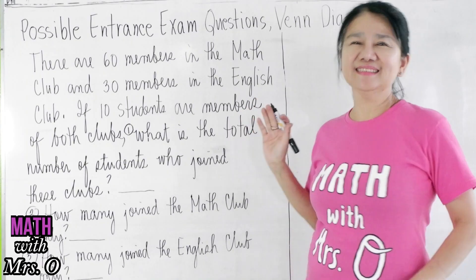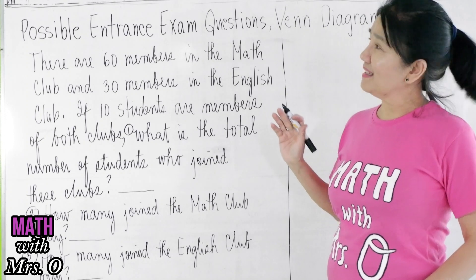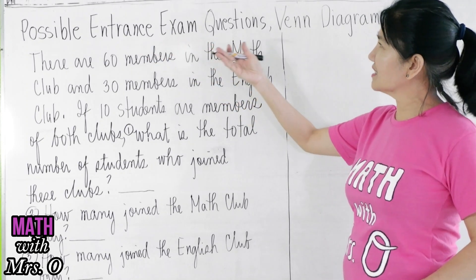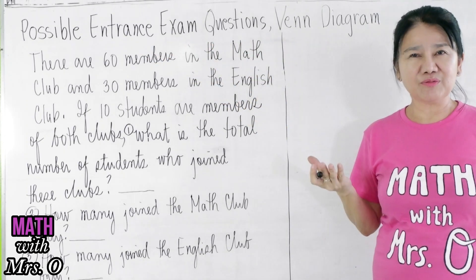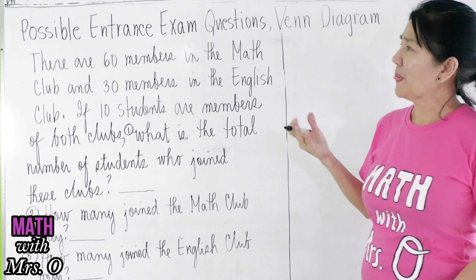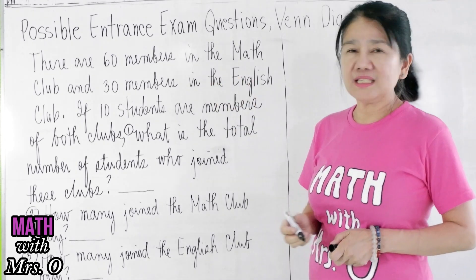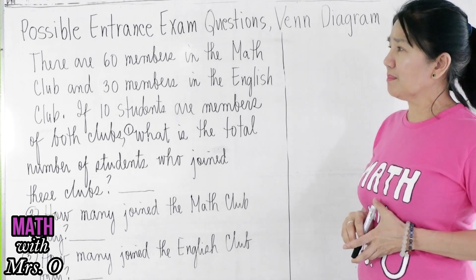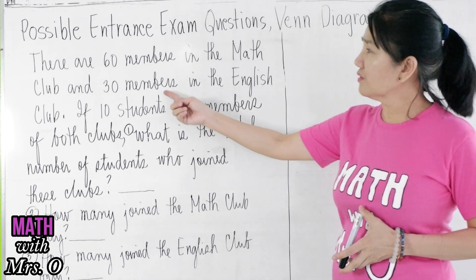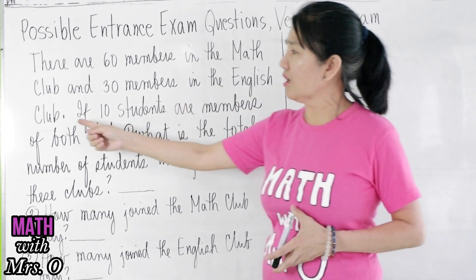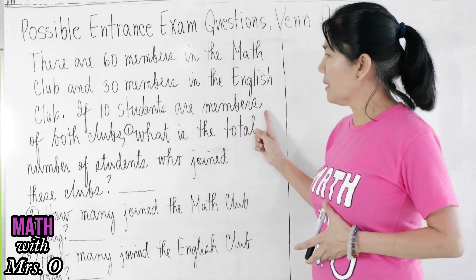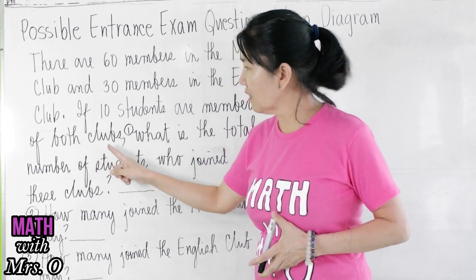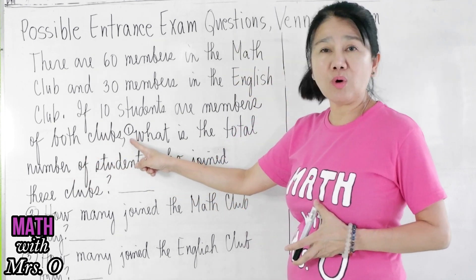Hello everyone, our lesson is again possible entrance exam questions about Venn diagrams. The question is: there are 60 members in the math club and 30 members in the English club. If 10 students are members of both clubs...